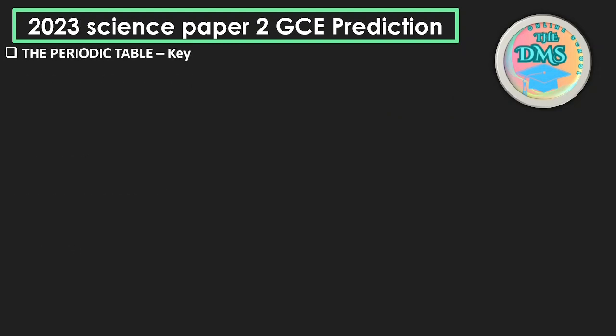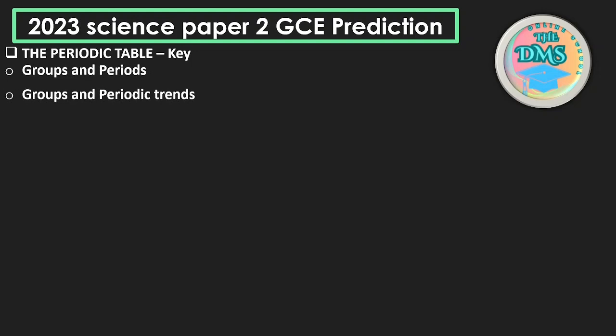The periodic table is a key topic — it has not been missing and comes every time. Under the periodic table you look at groups and periods, and then group and periodic trends. These are the things that have been coming.